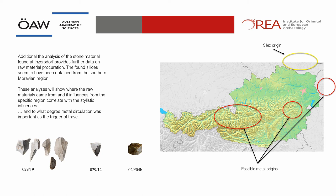Additionally, the analysis of stone material can give us more insight about raw material procurement. Combining the results of these analyses will answer questions on where the raw material came from, and will reveal to which degree metal circulation and raw material procurement was important as a trigger of travel in general, and how this impacted the communities.